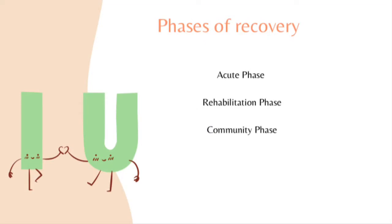With a lot of neurological impairments, the phases of recovery are broken down into about three sections. For stroke, these are the acute phase — immediately following the stroke — the rehabilitation phase, where you'll be performing most evaluations and interventions, and then the community or continuing adjustment phase.